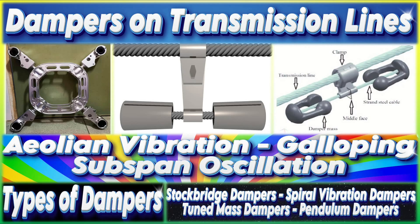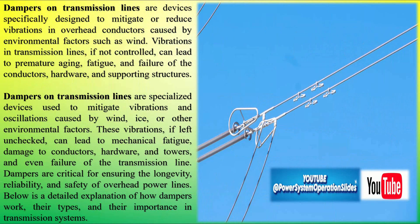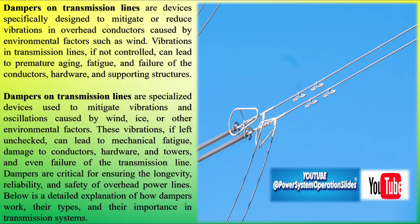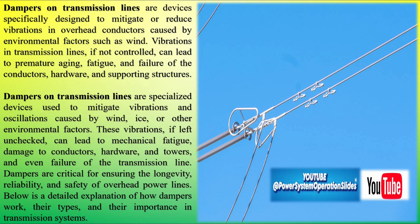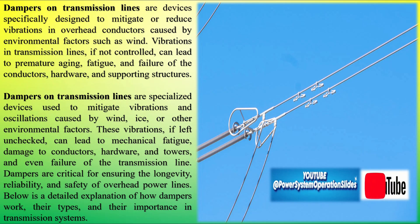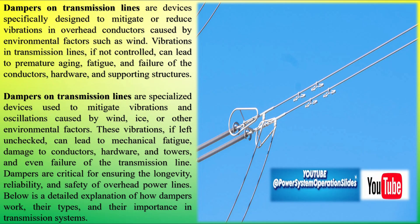Dampers on transmission lines are devices specifically designed to mitigate or reduce vibrations in overhead conductors caused by environmental factors such as wind. Vibrations in transmission lines, if not controlled, can lead to premature aging, fatigue, and failure of the conductors, hardware, and supporting structures.